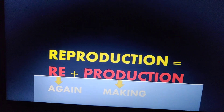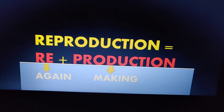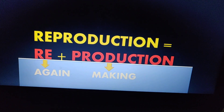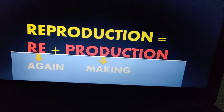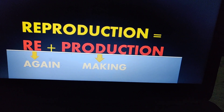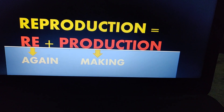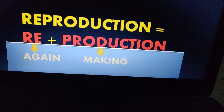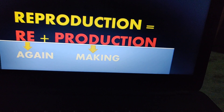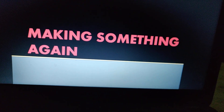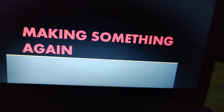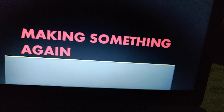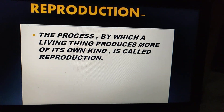Reproduction is a combination of the words 're' plus 'production.' 'Re' means again — for example, 'reinstall' means installing something again, 'reappear' means appearing again. 'Production' means to produce or make something. So reproduction basically means making something again.